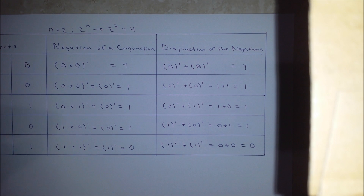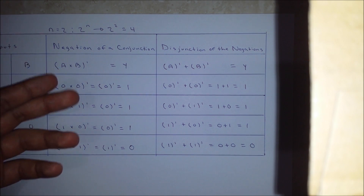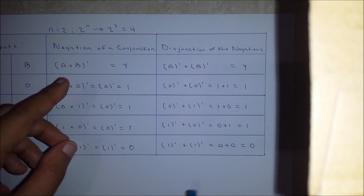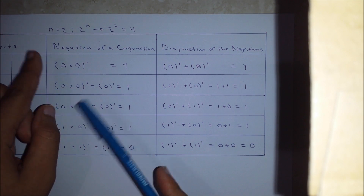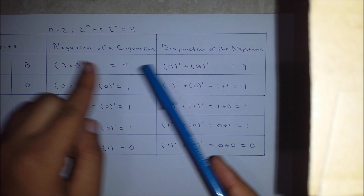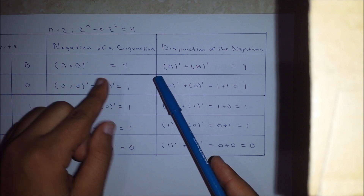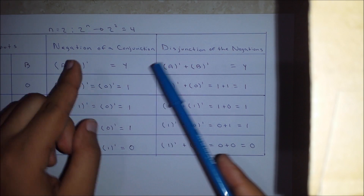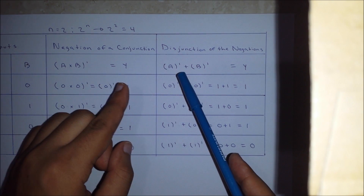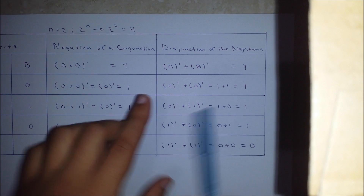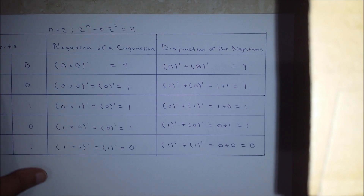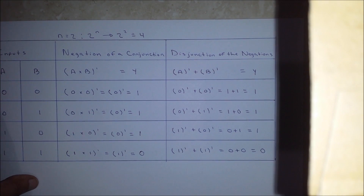Now we shall proceed to our second table, where we will prove that the negation of a disjunction is the conjunction of the negations. Let's move on.